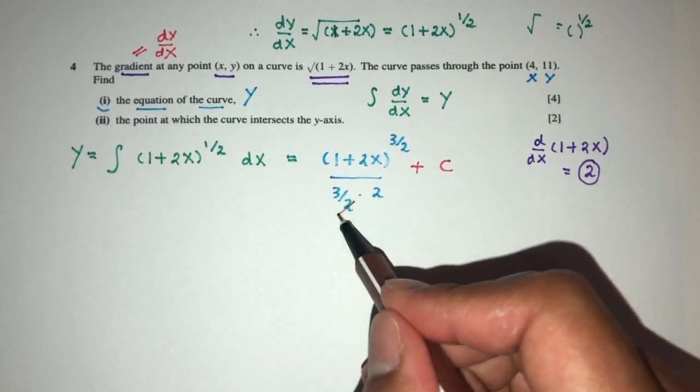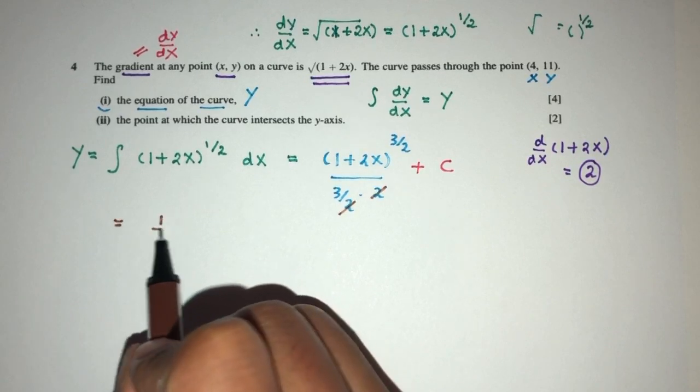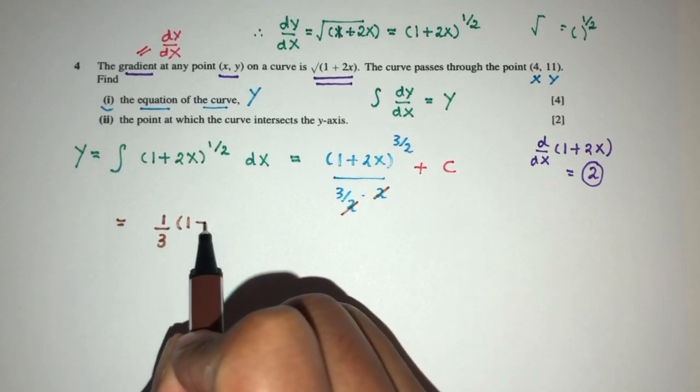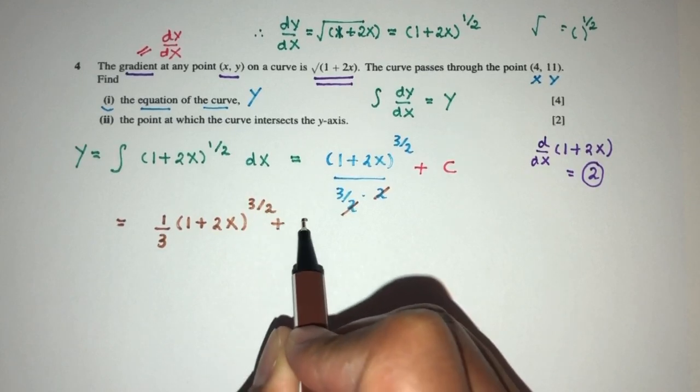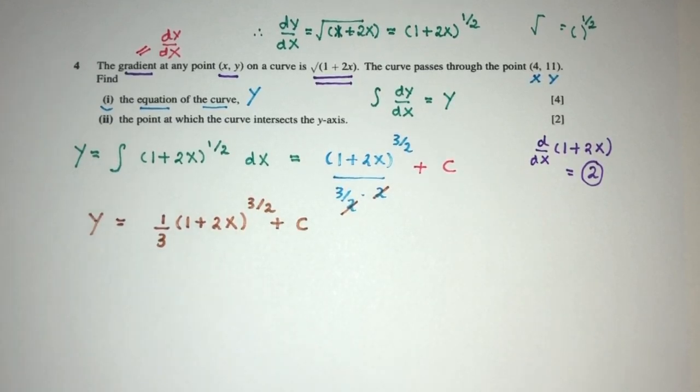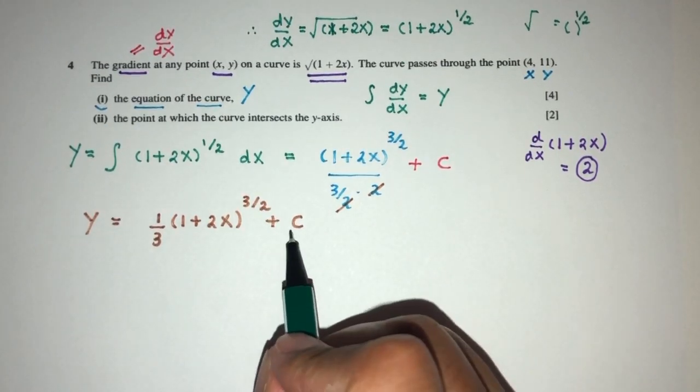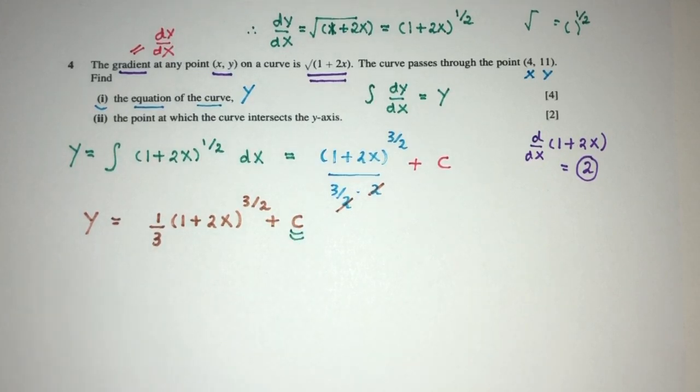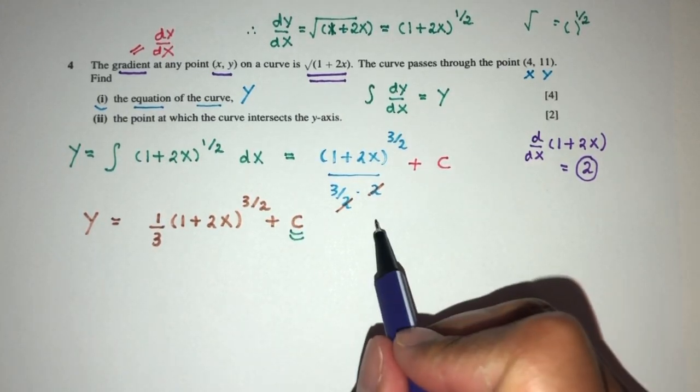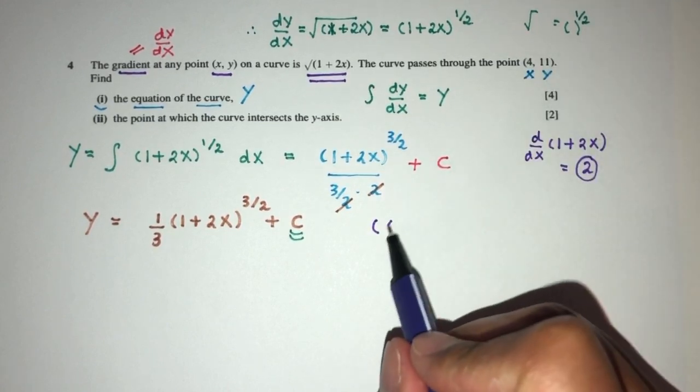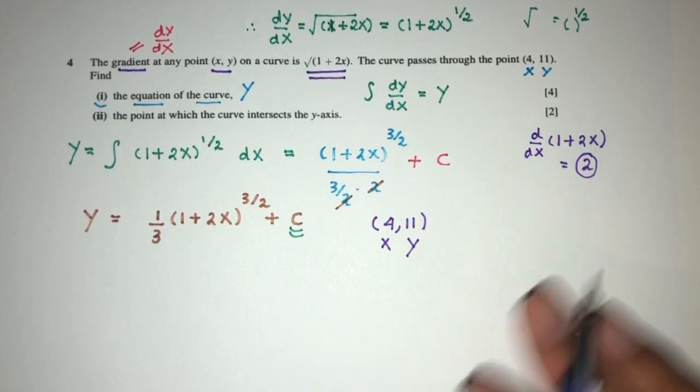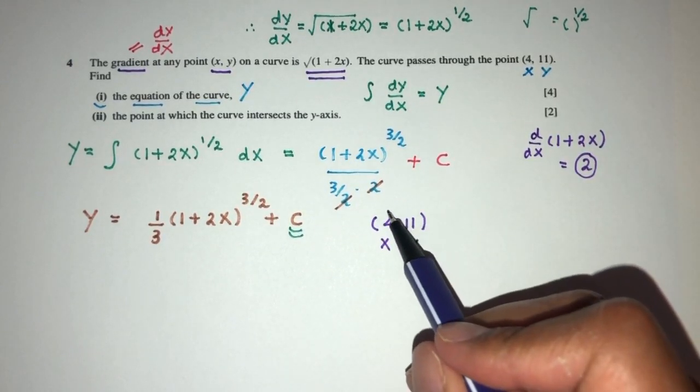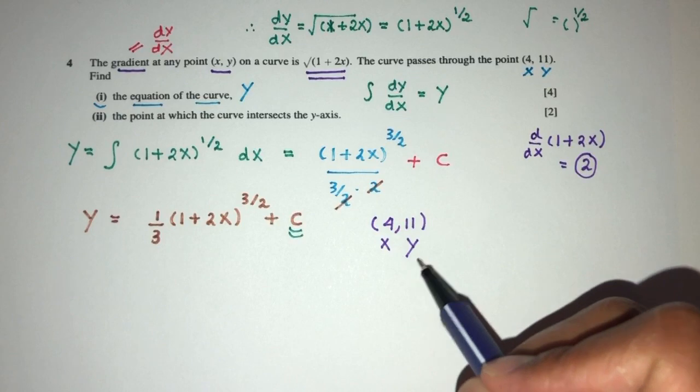Now simplify, this and this will cancel out. So you will have 1/3 times 1 plus 2x to the power 3/2 plus C as your value of y which is the equation of the curve. Now again, this is only part marks, we have to also find this value of C. So how do we find this value? As always, we have to use the given values or information that we have to find that. This is my x value and my y value. So it just means that when x is equal to 4, the value of y is 11. So let's do that.